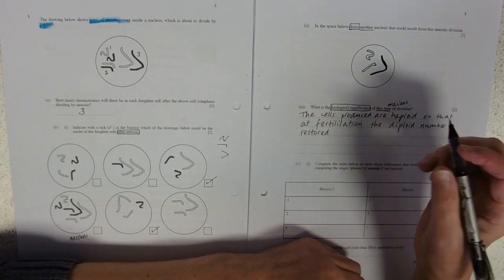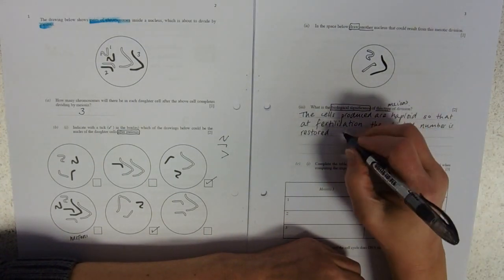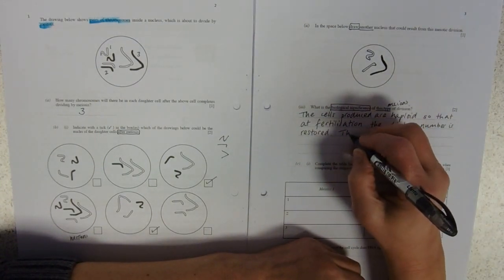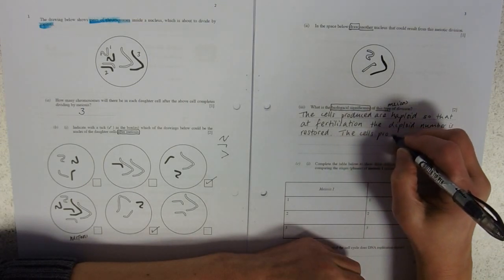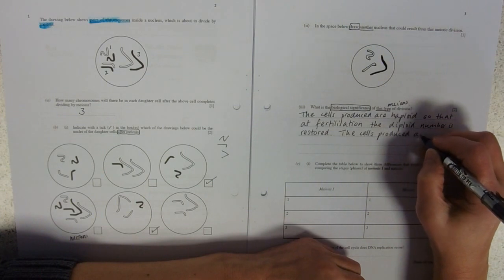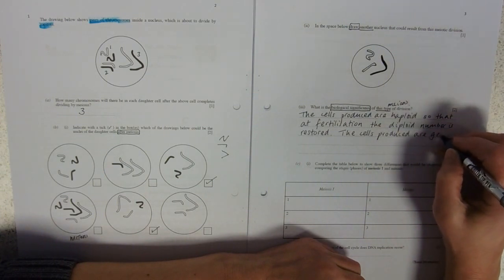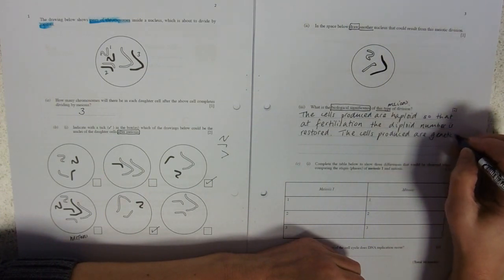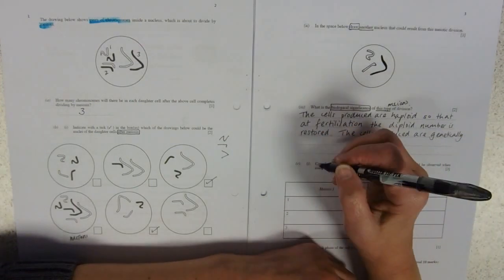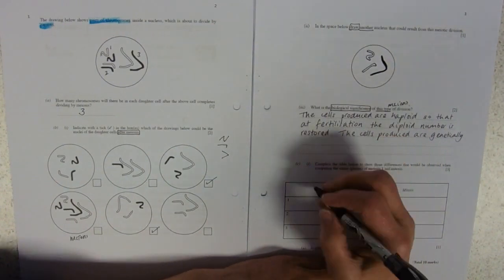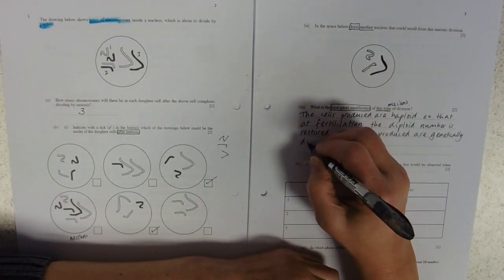What else could I have talked about? The cells produced are genetically varied or different. You do need to remember to say it's genetically - it's not enough to say they're varied or they're different. They're genetically different.